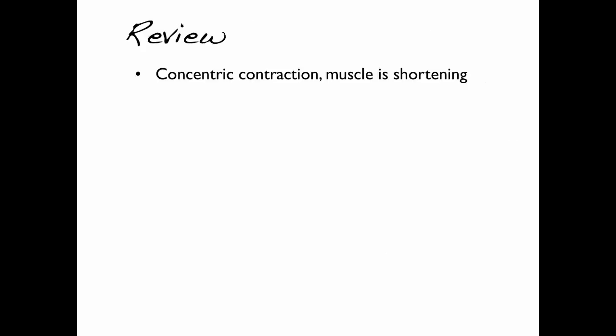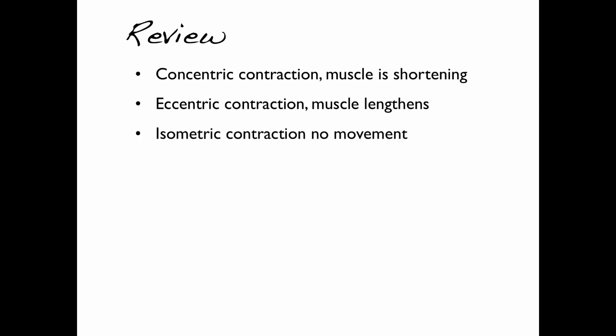So to review: concentric contractions — the muscle is shortening. Eccentric contractions — the muscle lengthens. And isometric contraction — there is no movement.